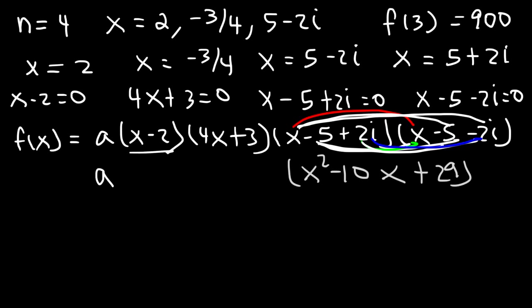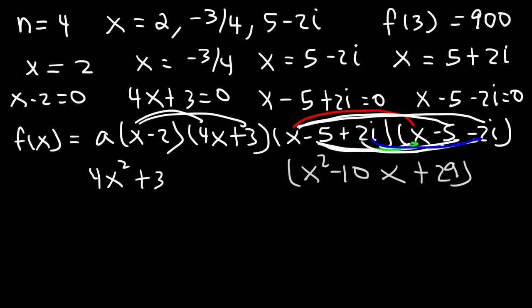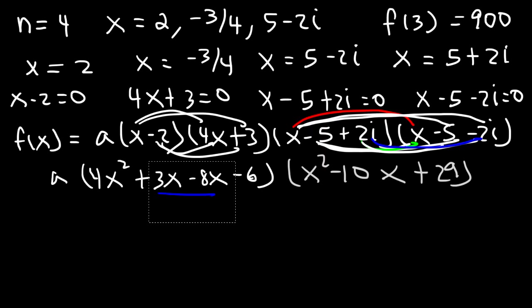Now let's FOIL x minus 2 and 4x plus 3. x times 4x is 4x squared, x times 3 is 3x, negative 2 times 4x is negative 8x, and negative 2 times 3 is negative 6. Combining like terms, 3x minus 8x is negative 5x. So we get 4x squared minus 5x minus 6.